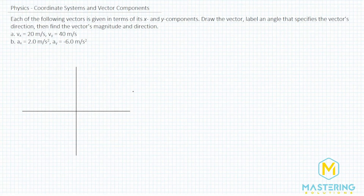Welcome to Mastering Solutions. In this vector problem, they tell us that each of the following vectors is given in terms of its x and y components. They ask us to draw the vector, label an angle that specifies the vector's direction, and then find the magnitude and the direction.